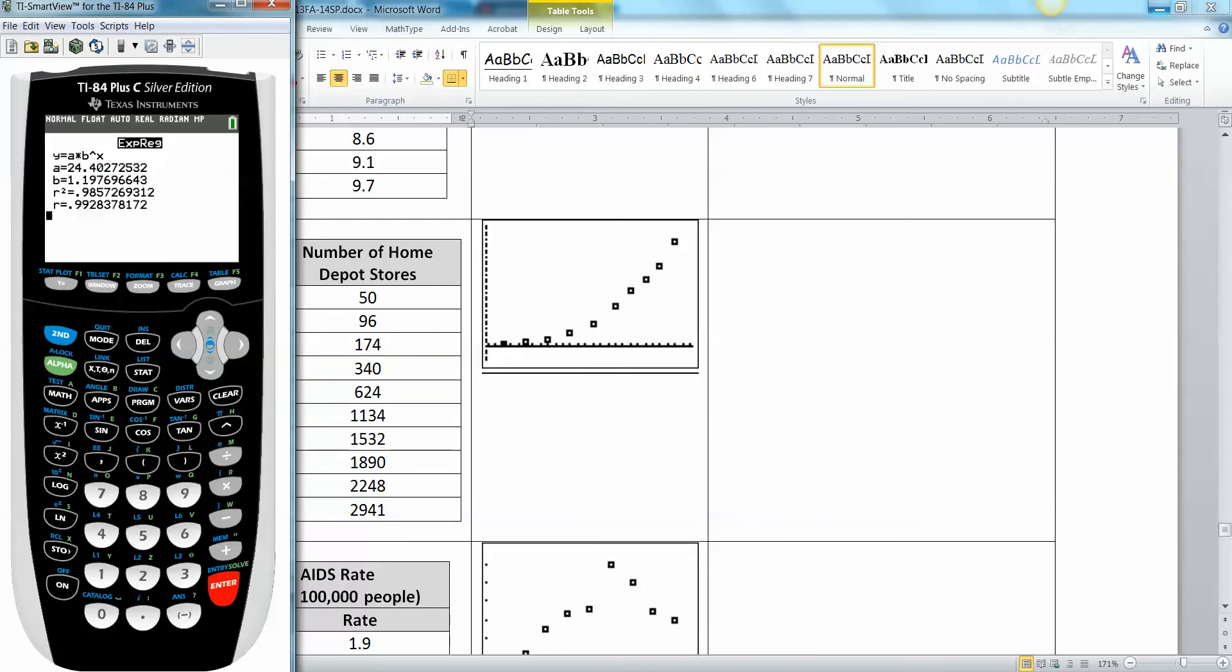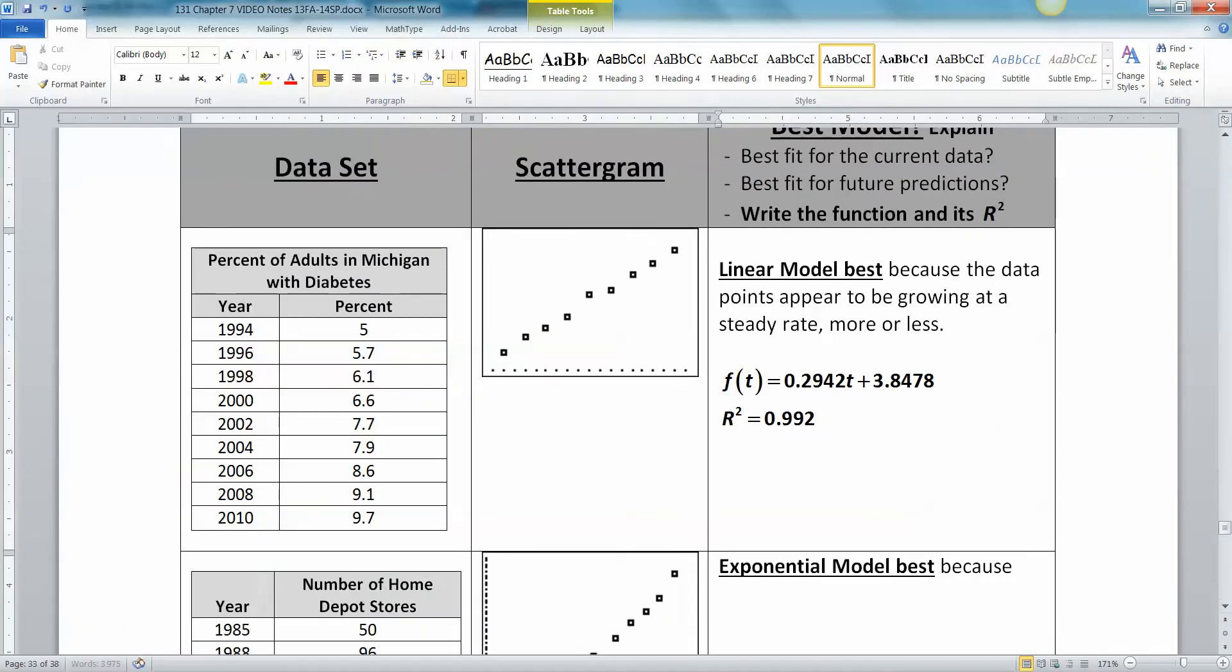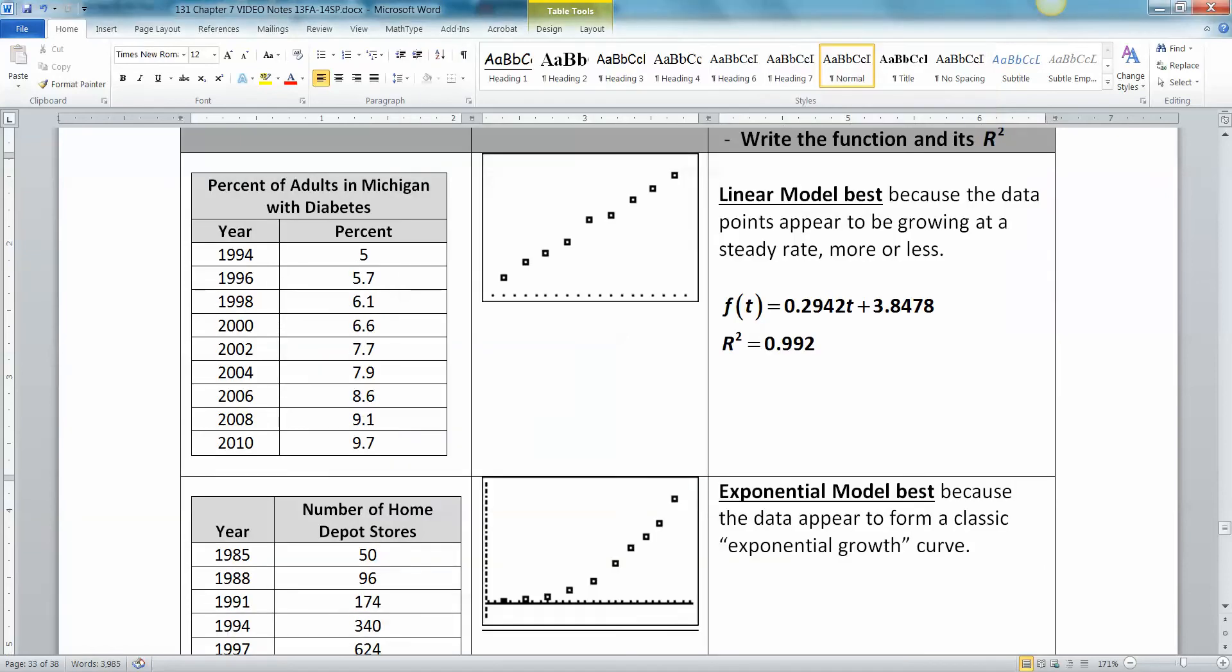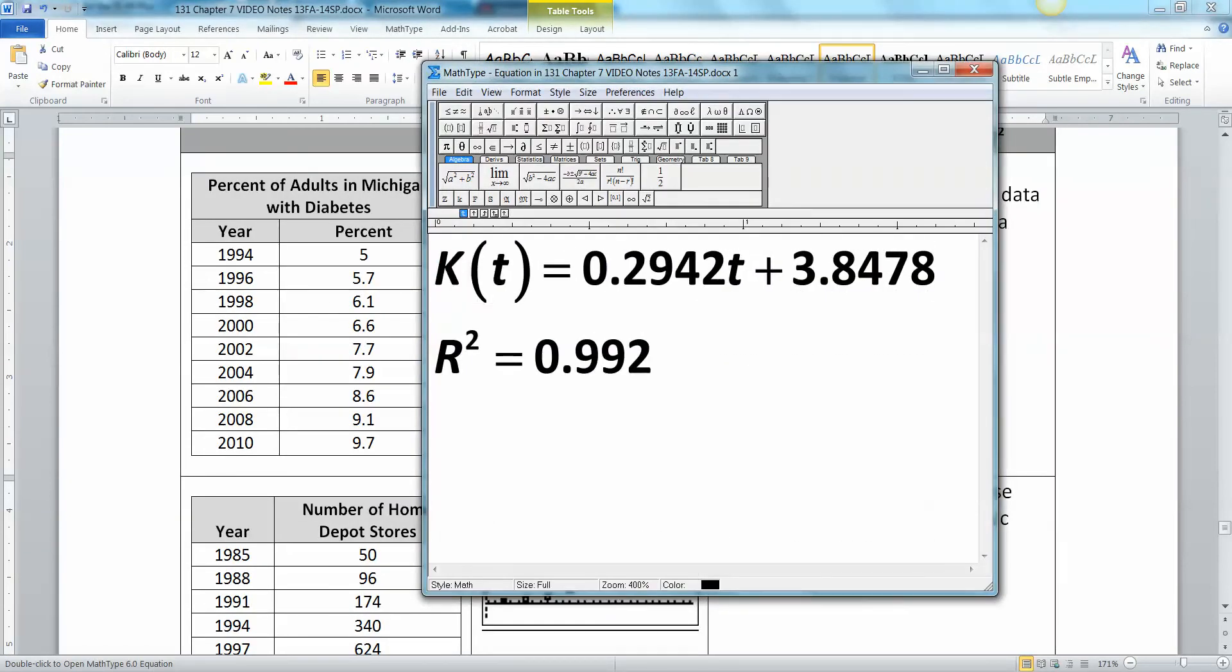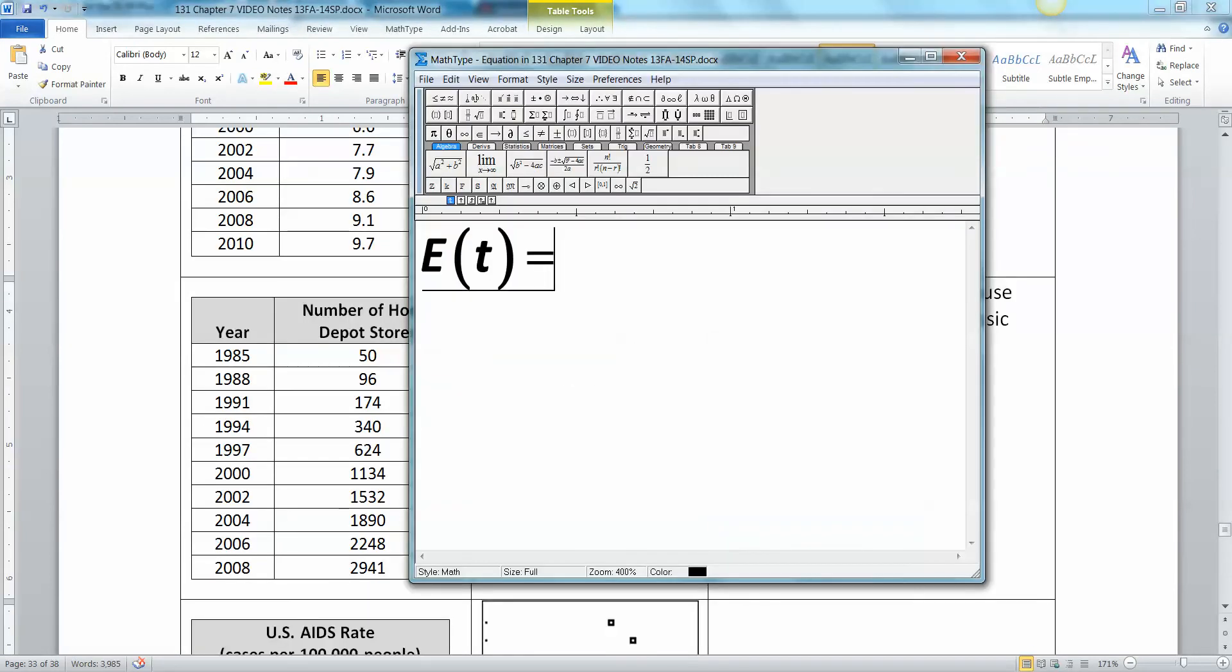I'm going to go type that up in the problem. The exponential model was best because the data appear to form a classic exponential growth curve. E of t, because this is exponential. Actually, I should have labeled this one L of t for linear, just for the heck of it. So that one was a linear model, this one's going to be an exponential model. E of t equals 24.403 times 1.198 to the t.